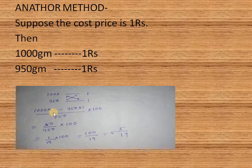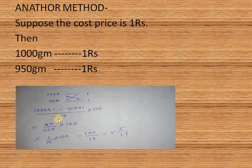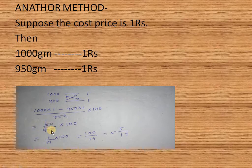So here we cross multiply: 1000 into 1 minus 950 into 1, divided by 950 into 1, into 100. This equals 50 by 950 into 100. After calculating, we get 100 by 19, which equals 5 and 5/19 percent.